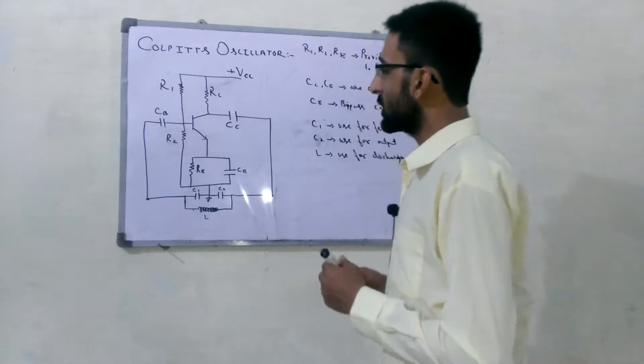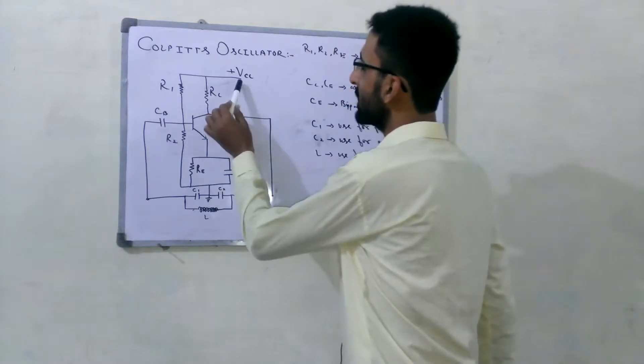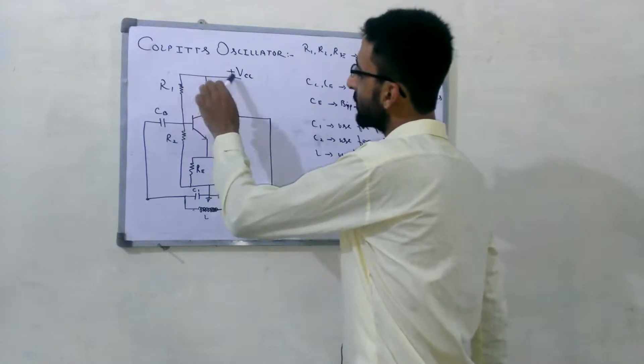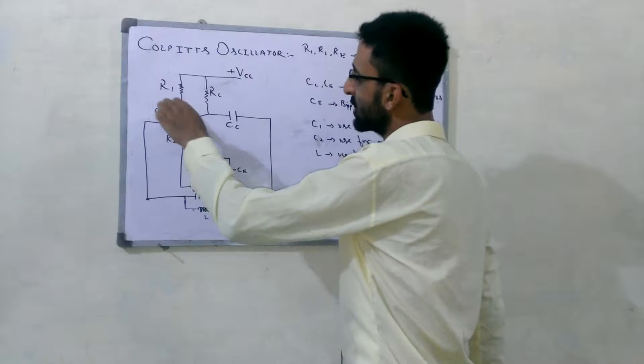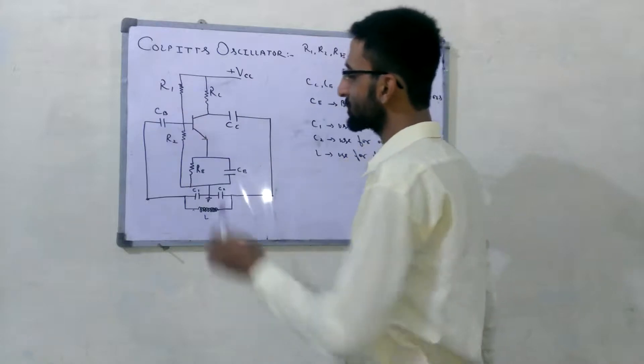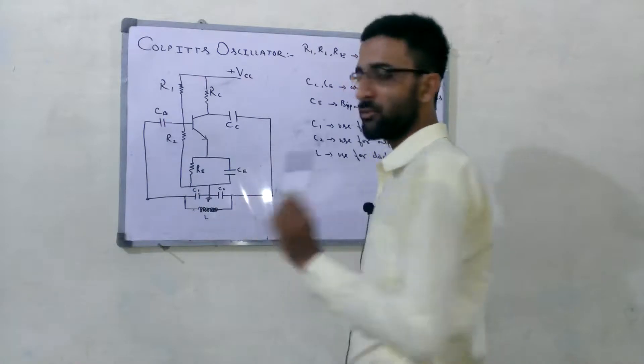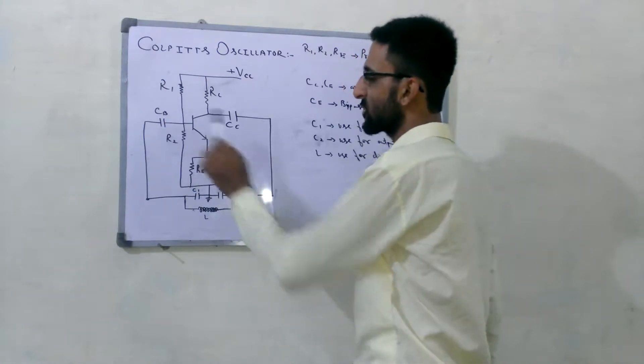So, the working is done. When VCC is on, then this current flows towards this voltage divider circuit, and then it provides a sufficient biasing to this transistor.